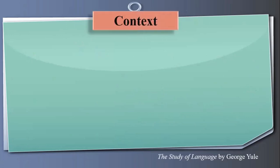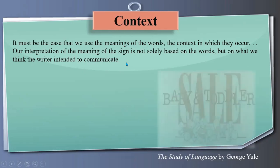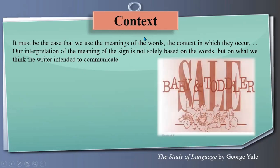Now let's talk about context. It must be the case that we use the meanings of words within the context in which they occur. There could be meanings in different contexts. Our interpretation of the meaning of a sign is not solely based on the words, but on what we think the writer intended to communicate. Sometimes we are reading the intentions of the writer — what they are communicating. We also can recognize intentions. Context is very important to know a particular meaning.